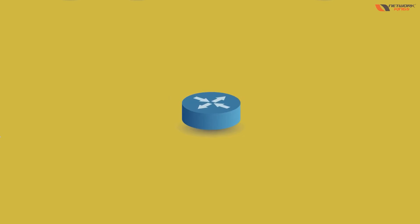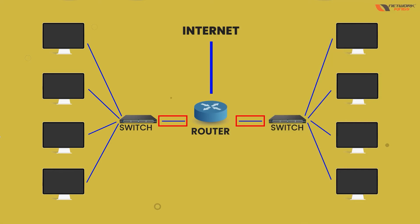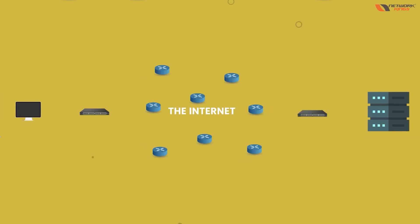After the switch, we have a device which is like the father of network devices — the router. Basically, if you want to connect two different networks, because two different networks cannot talk to each other by default, you need a router. The internet is also a different network. That's why everyone has a Wi-Fi router at home — routers connect two or more different networks together, and this is how we build the internet.